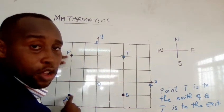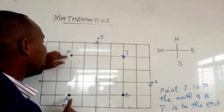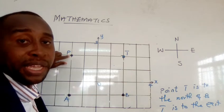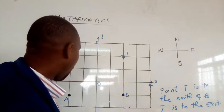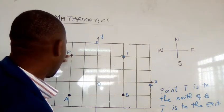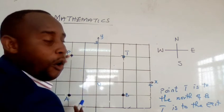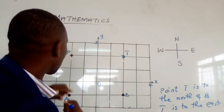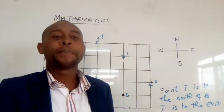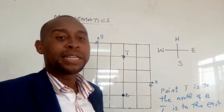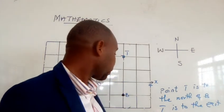When you stand at A, you see that point P is to the north of A. So we say: point P is to the north of point A.